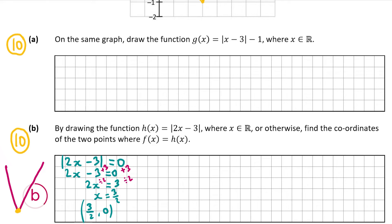Now I need a point to the left and a point to the right of (3/2, 0) to draw the two lines of the V shape. For the left side, I'll pick x equals 1, which is less than 3/2, and substitute into h of x: the absolute value of 2 times 1 minus 3, which is the absolute value of 2 minus 3, giving the absolute value of minus 1, which equals 1. So the coordinate on the left is (1, 1).